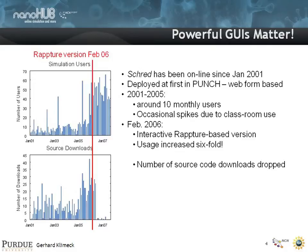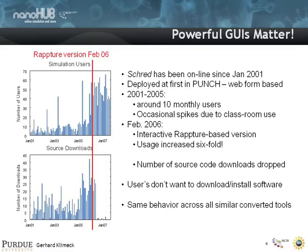What's even more striking is that before, about 10 people were downloading the source every month, saying 'let me try to download it and install it myself.' You could still download it after the interactive version was there, but people weren't that interested anymore in downloading the source, installing it, maintaining it, compiling it, and figuring out how to use it. Really powerful graphical user interfaces matter. It's not just a matter of putting your stuff out there with a tarball. If you want to make your stuff useful, you ought to spend time making it useful. Users really don't want to download and install software — and we see that behavior across all similar converted tools.